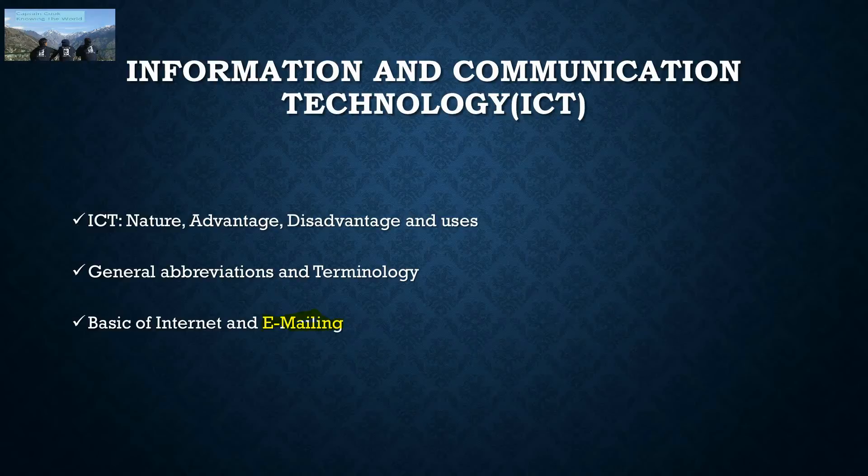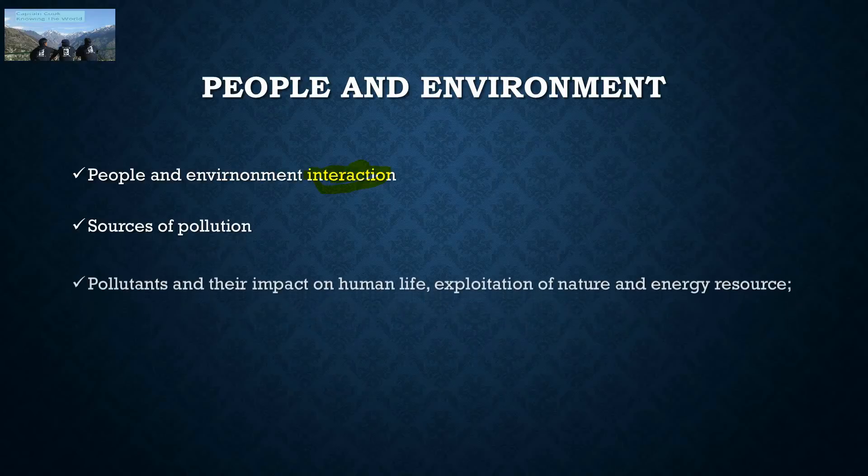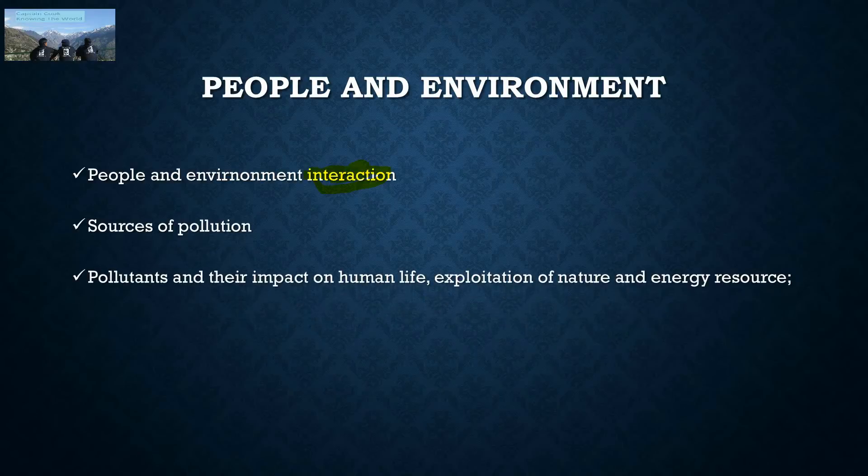People and environment: You should know the different types of people along with their interaction, how to interact with them along with the environment, sources of pollution, types of pollution, types of pollutants and their impact on human life, exploitation of nature and energy resources, natural hazards and mitigation. This is a very static part. It just needs to be studied once, and if you're doing it through a vision, that is it.